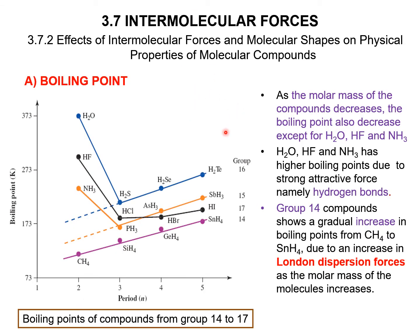This chart shows the boiling points of compounds from groups 14 to 17. As the molar mass of the compounds decreases going up the group, the boiling point also decreases. For group 14: tin, germanium, silicon, carbon — molar mass decreases, and so does the boiling point.